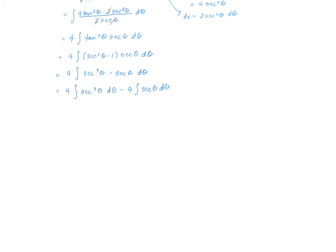This first part by the reduction formula is going to be four secant tangent over two, plus one half times four — so four over two, which is two — times the integral of secant of theta d theta. And I still have this minus four times the integral of secant theta d theta.